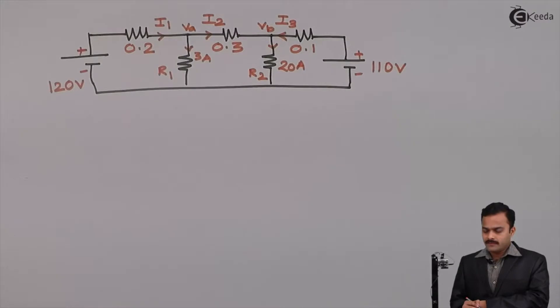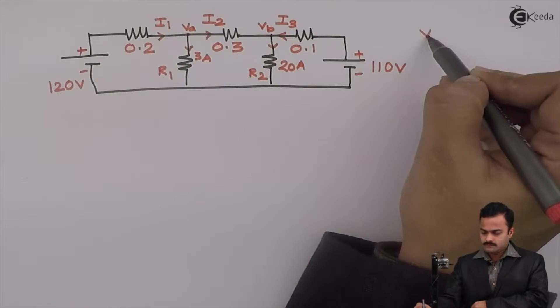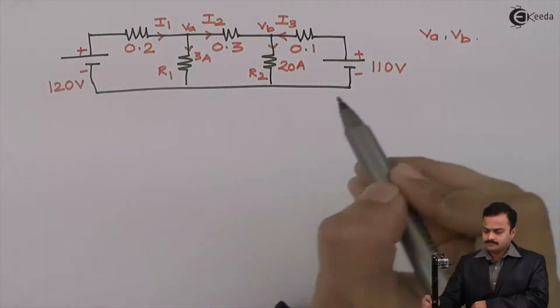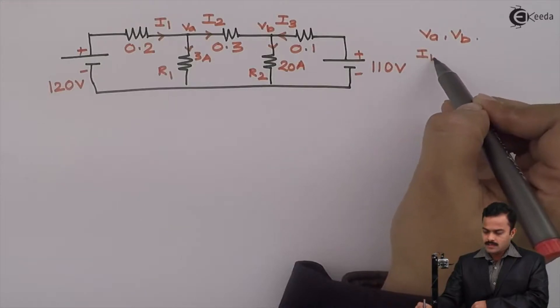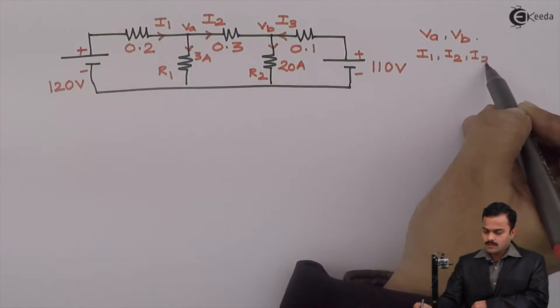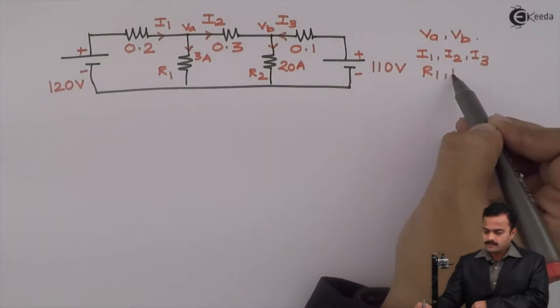Now, objective is to find out all the unknowns. So, here we are supposed to find out Va, Vb, currents I1, I2, I3 and resistances R1, R2.